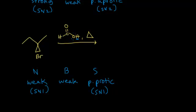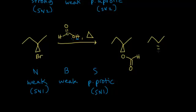We're going to get a secondary carbocation, and carbocations are flat. When the nucleophilic portion attacks, we could get retention of configuration or inversion of configuration — and we lose a proton in this mechanism. So both products are possible; these two are enantiomers of each other. We got two products because this mechanism proceeded via SN1.